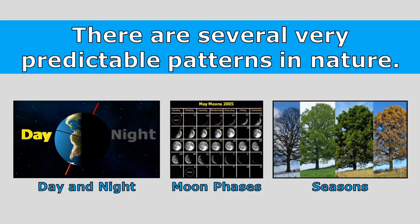There are several very predictable patterns in nature, like the pattern of day and night, the pattern of moon phases that we see, and the pattern of seasons. All of these patterns repeat themselves in the same way, allowing us to predict what will come next.